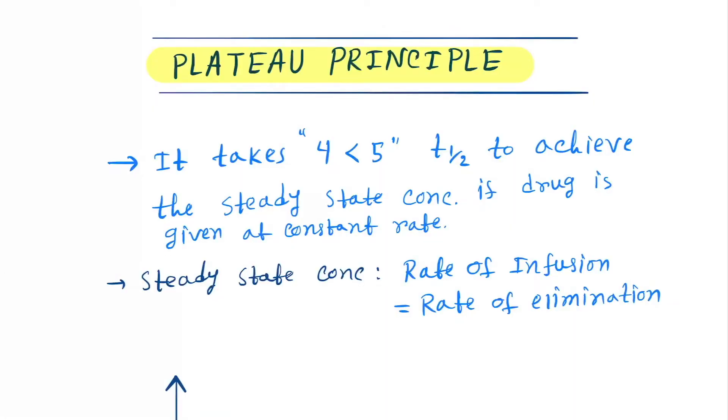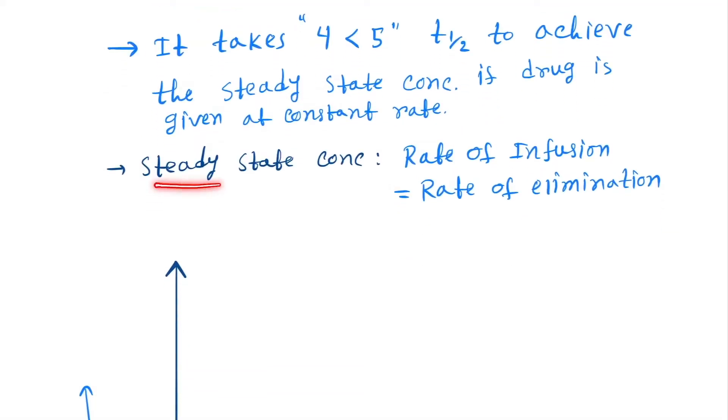Hello friends, today our topic is the plateau principle. What is the plateau principle? It says that it takes 4 to 5 half-lives to achieve the steady state concentration if a drug is given at constant rate. Steady state concentration is when the rate of infusion equals the rate of elimination of a drug.